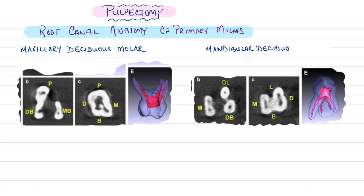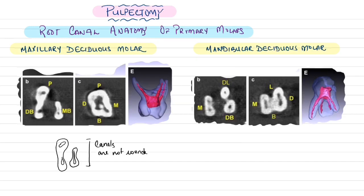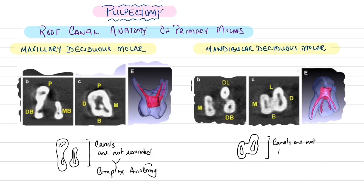The root canal anatomy of primary deciduous molars — both maxillary and mandibular — is elliptical in configuration rather than rounded, making it a complex anatomy where removal of the pulp is quite difficult. Mandibular molar canals are also roughly oval or elliptical rather than rounded, presenting complex canal anatomy.